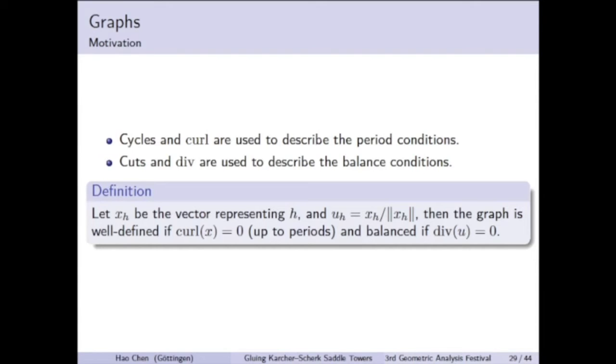We define x sub edge to be the edge vectors. So the norm of x edge is the length of the edge and the direction is the direction of the half-edge. Then we define the unit vector u sub edge in the direction of the half-edge. The graph is well defined if the curl is zero. That means we are back to the same point after traveling around a cycle.